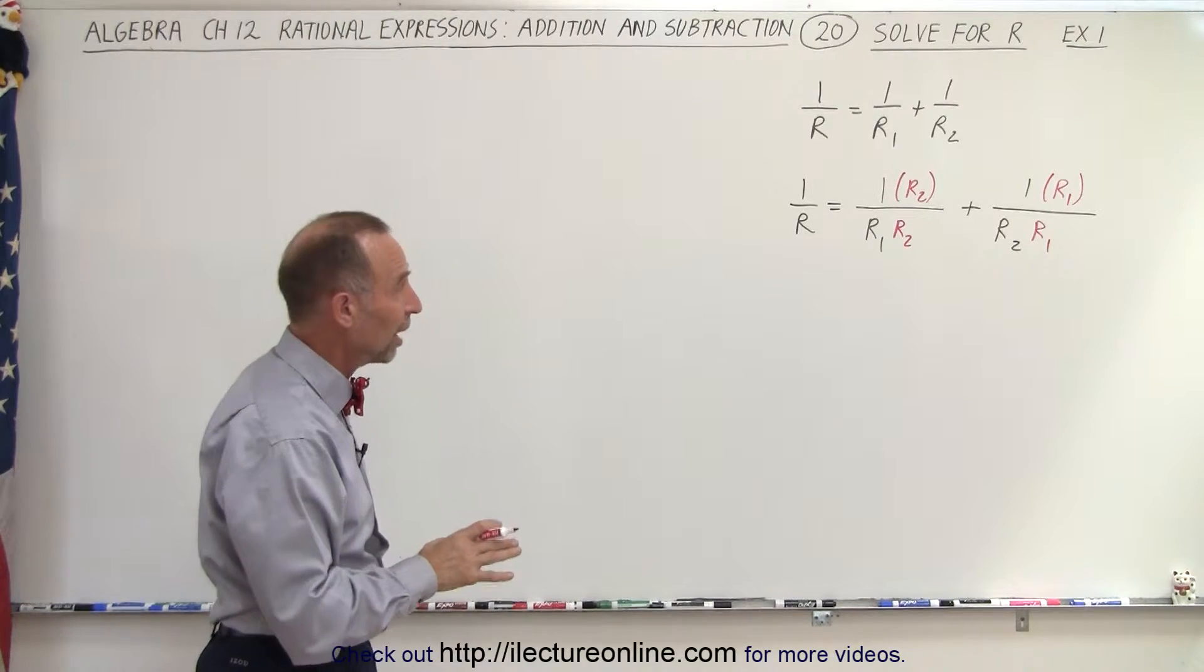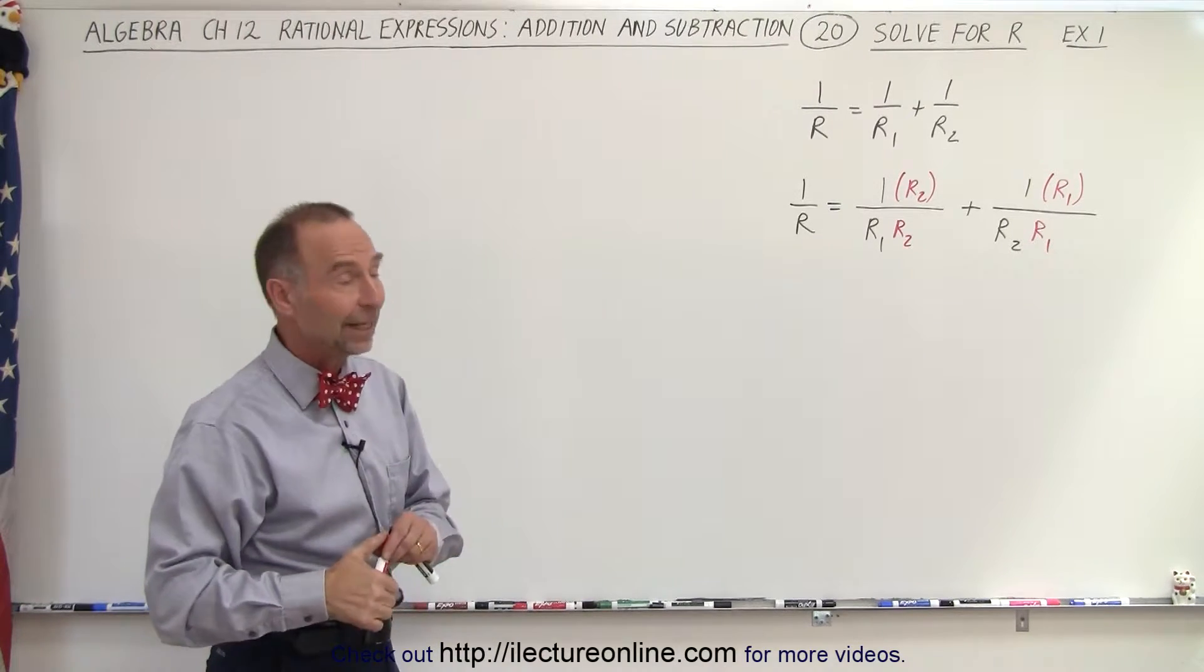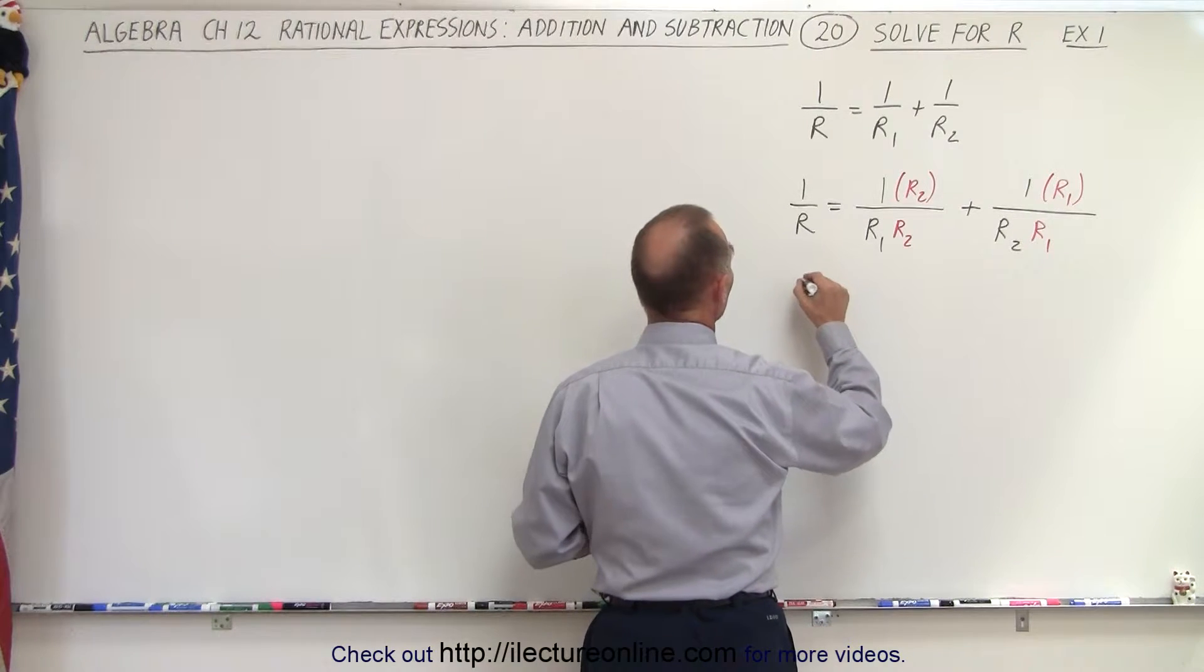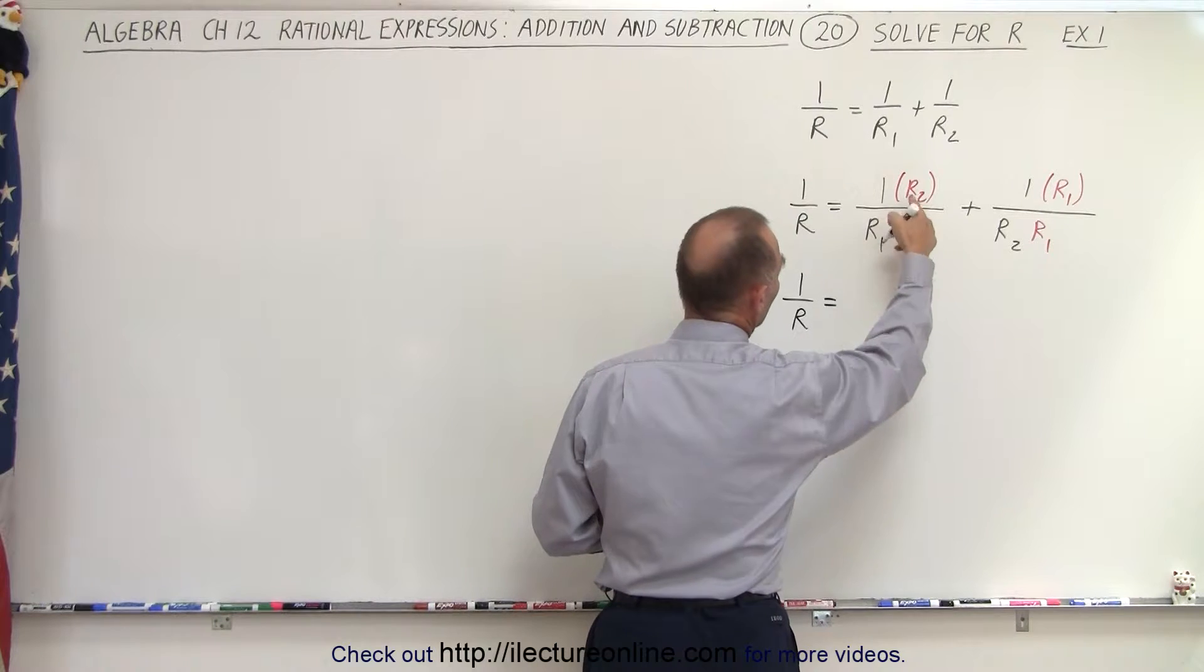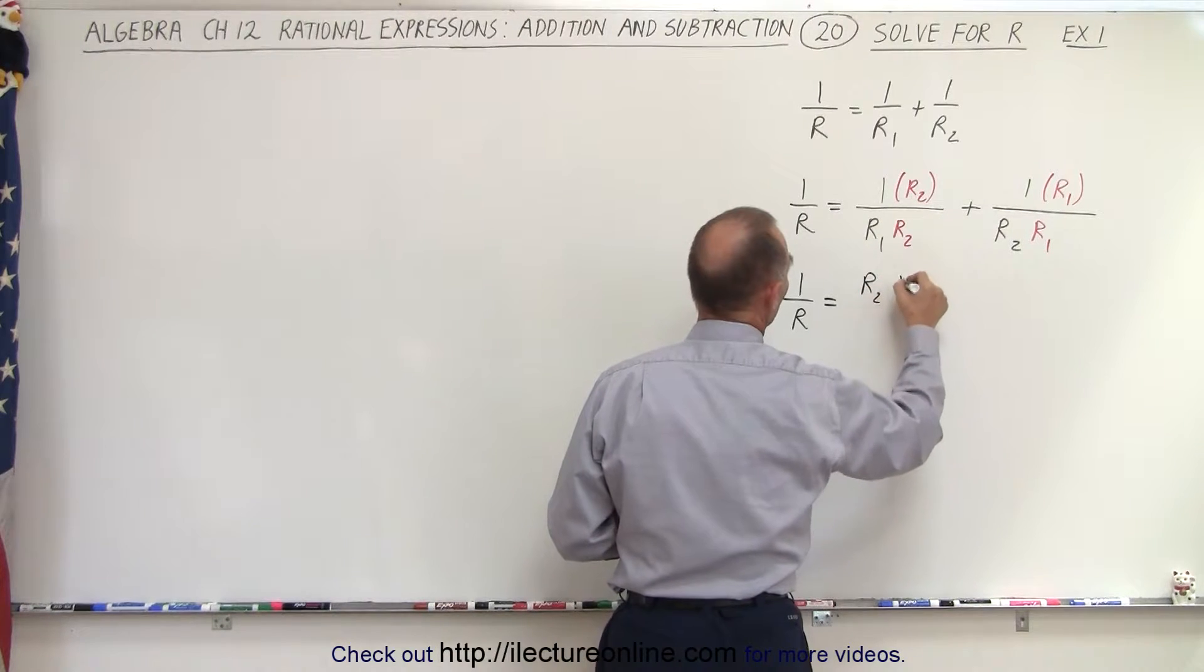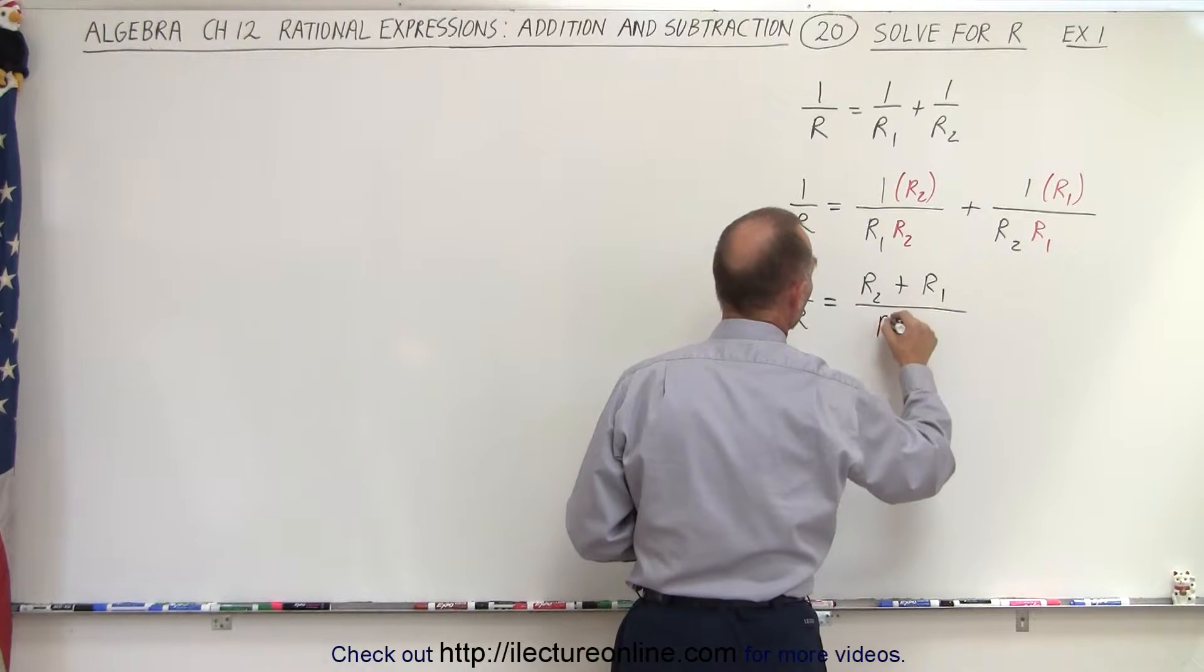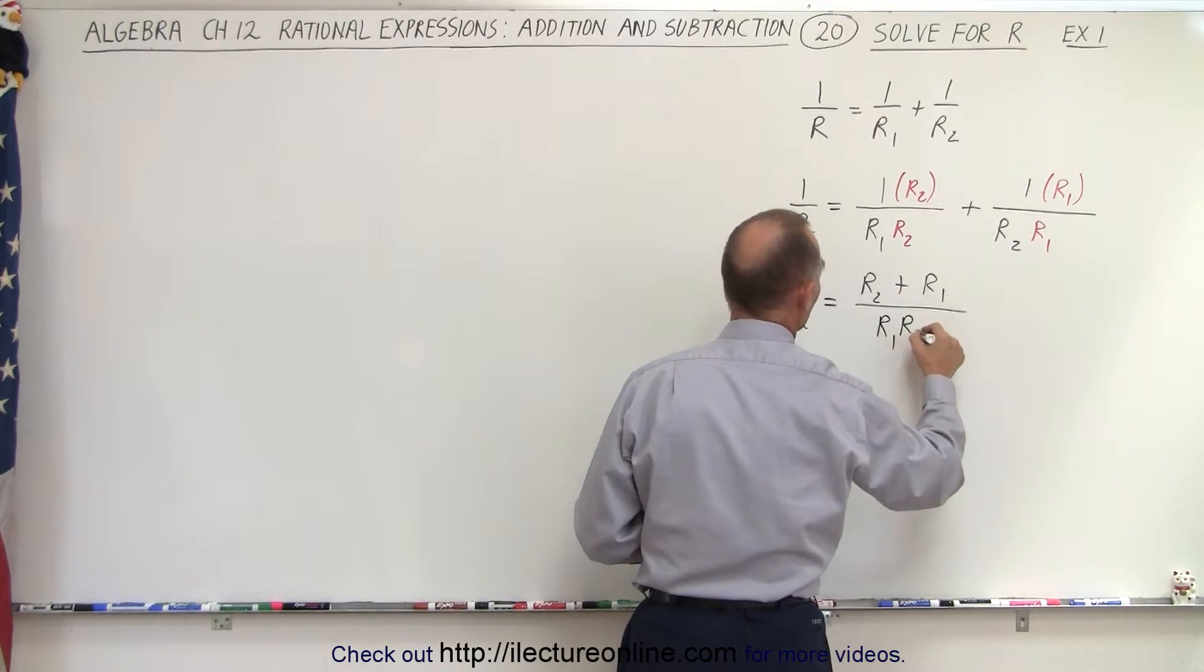Notice that the denominators are now exactly the same, and we can add the two rational expressions on the right side of the equal sign. So we end up with 1 over r is equal to r2 plus r1, all divided by the common denominator of r1 times r2.